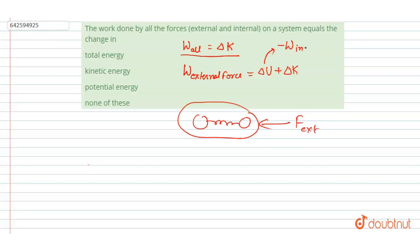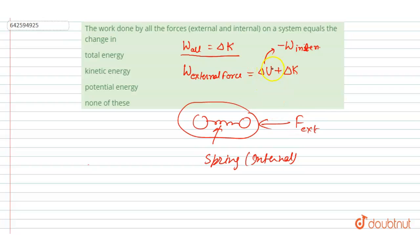This change in potential energy is also equal to the negative of the work done by the internal force — specifically the conservative internal force. In this case, the spring force is both conservative and internal. So the work done by the internal force equals negative of the change in potential energy.